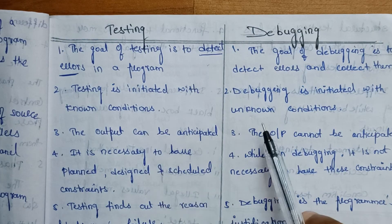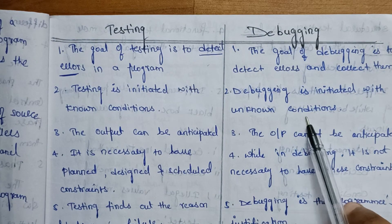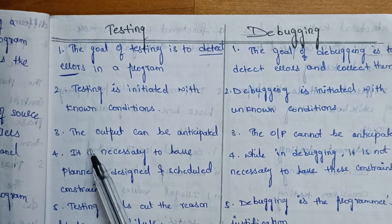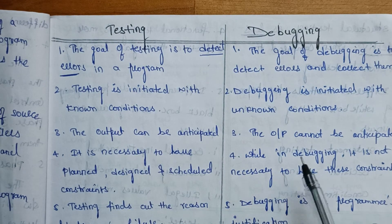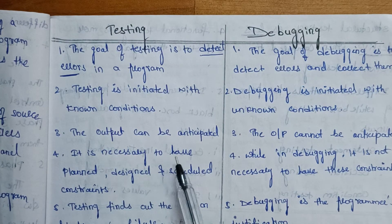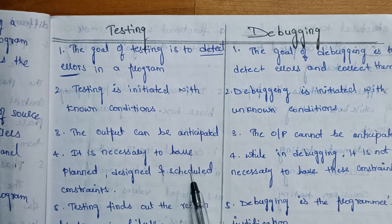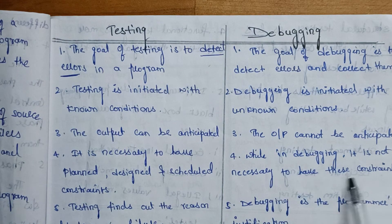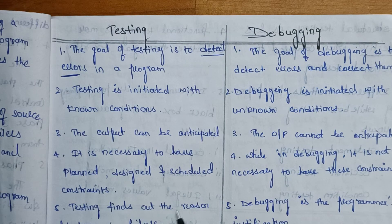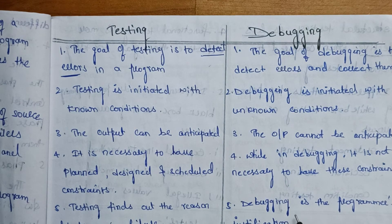Testing is initiated with known conditions, whereas debugging uses unknown conditions. In testing, the output can be anticipated, but in debugging the output can't be anticipated. It is necessary to have planned, designed, and scheduled constraints in testing, while in debugging it is not necessary to have these constraints. Testing finds out the reasons for a program's failure.